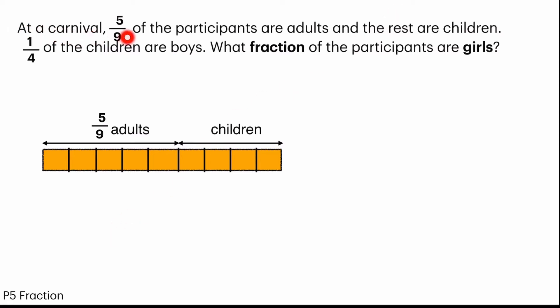At a carnival, 5 out of 9 of the participants are adults, and the rest are children. So I drew a model here, cutting it into 9 parts. And out of 9 parts, 5 parts are adults, and the rest are children.